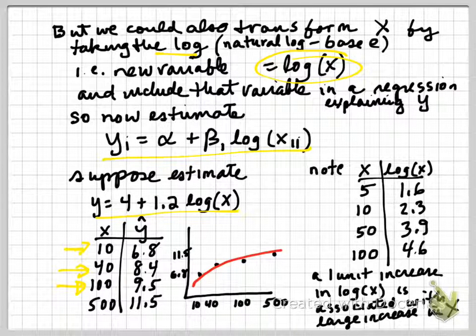So if we have x equals 100, we take the log of that, multiply by 1.2, and add 4, we get 9.5. So if we graph this relationship, we get a relationship like this, again, a nonlinear relationship. So that's the regression that we might estimate.